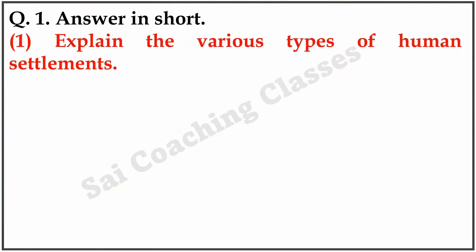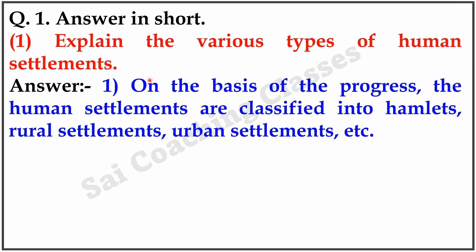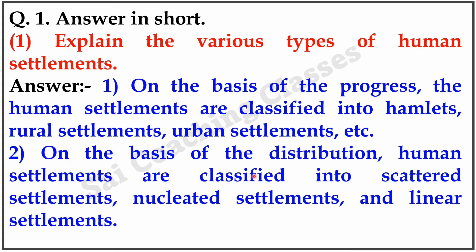Question 1. Answer in short. Explain the various types of human settlements. Answer: On the basis of progress, human settlements are classified into hamlets, rural settlements, urban settlements, etc. On the basis of distribution, human settlements are classified into scattered settlements, nucleated settlements, and linear settlements.